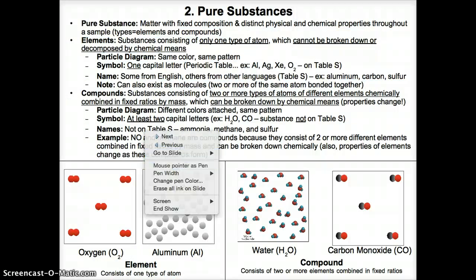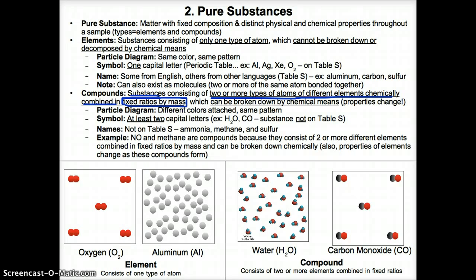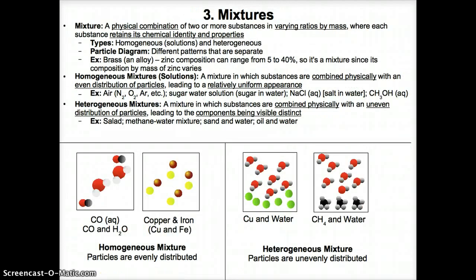Compounds are substances with two or more atoms of different elements chemically combined together in fixed ratios by mass. By fixed ratios by mass, I mean that if you have a specific compound, it must always have the same number of atoms of each element. For example, water must always be one oxygen bonded to two hydrogens — if you change the amounts of oxygen and hydrogen, it's no longer water. For carbon monoxide, the fixed ratio is always one carbon and one oxygen.